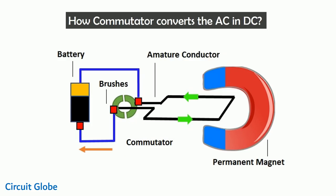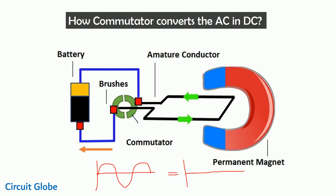Commutator converts the alternating current into direct current. Consider this is the image of DC generator. DC generator provides the direct current output. But in DC generator, the armature conductor is rotating under the magnetic field. If any conductor rotates under the magnetic field, that means alternating current induces in their conductor. For getting the direct current output, we are using the commutator along with the brushes. Here we are using the split ring commutator, which means there is an air gap between the rings of the commutator. Now suppose alternating current induces in this conductor — this brush allows the current to move only in one direction.